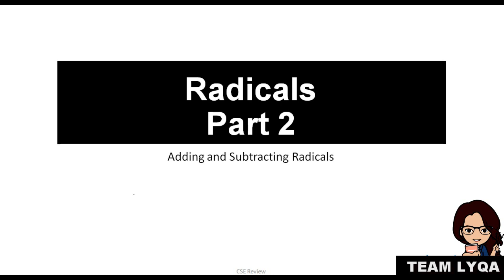This is our first example. If you have the workbook, again, page 11. Then go there and this is number, I believe, 3 on the workbook. So you can follow along. So the question is, square root of 7 minus square root of 7 plus square root of 7.